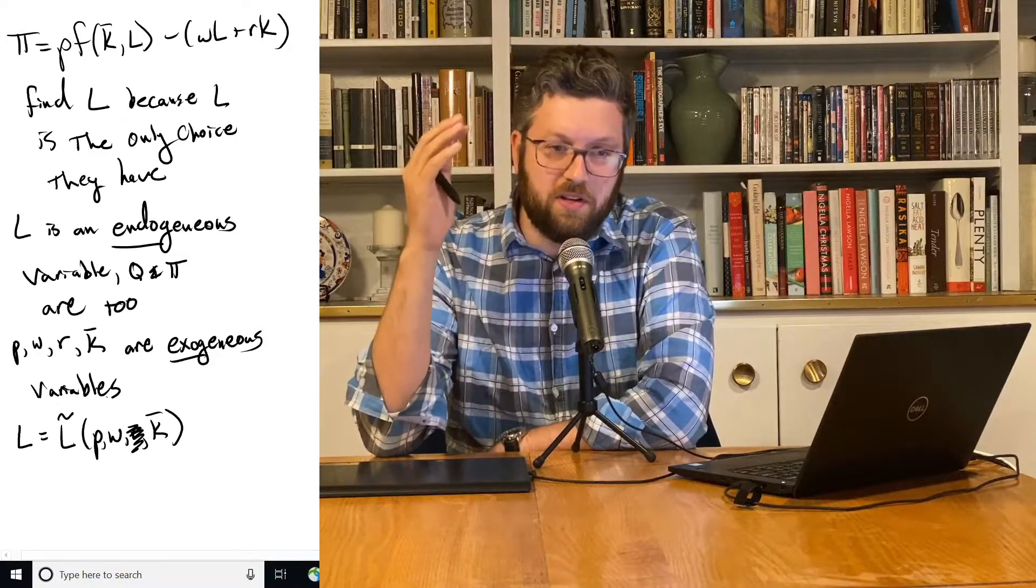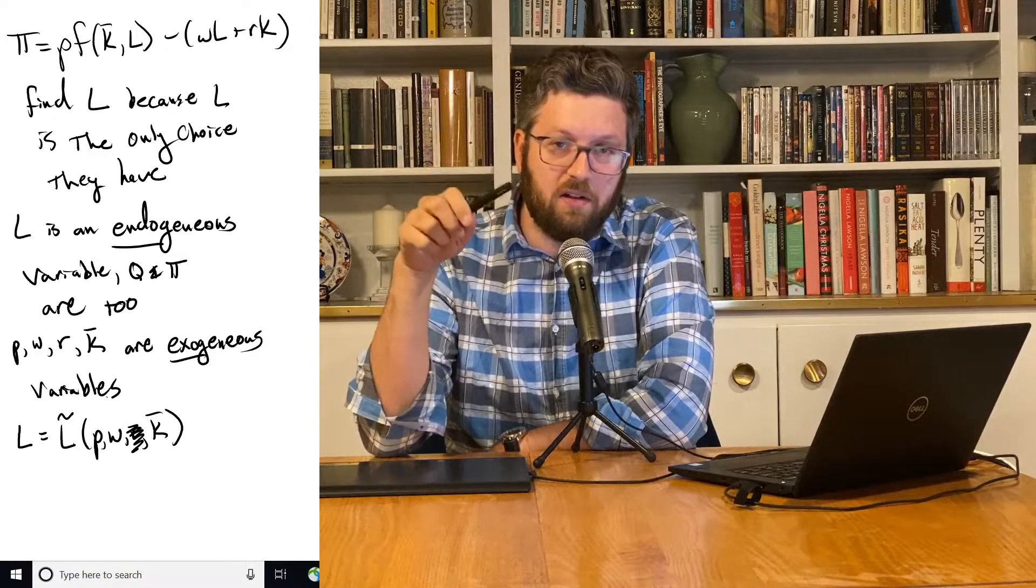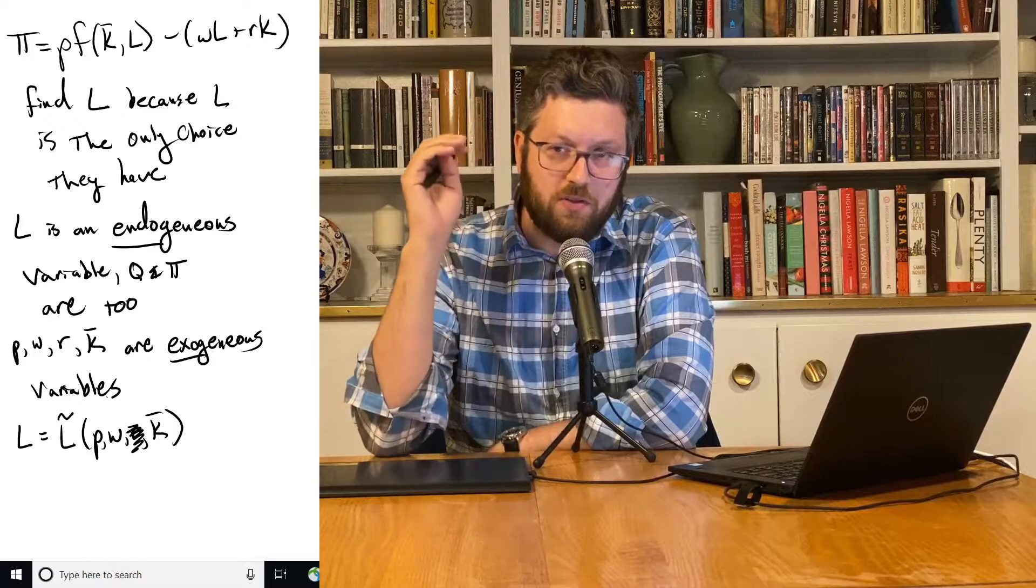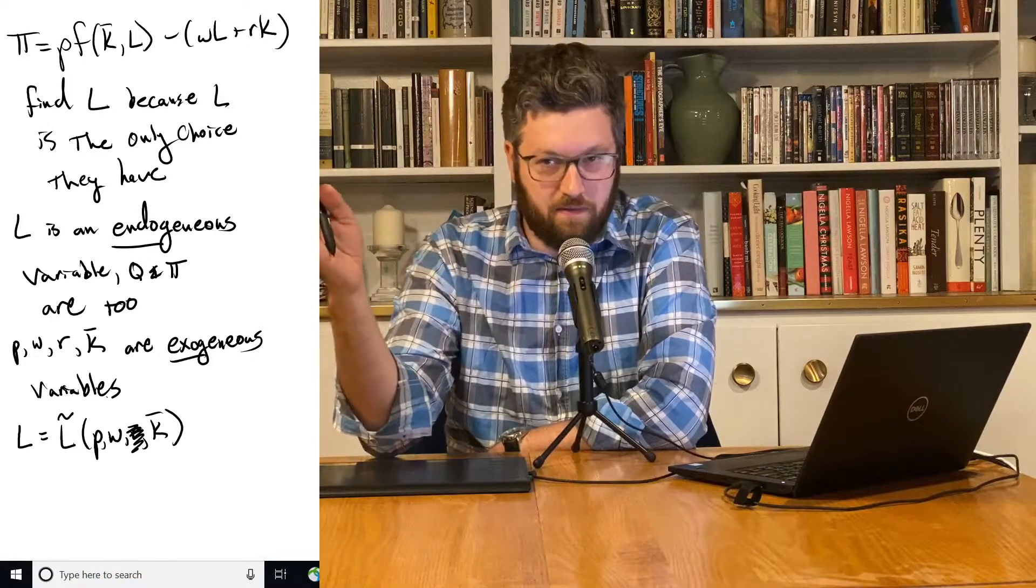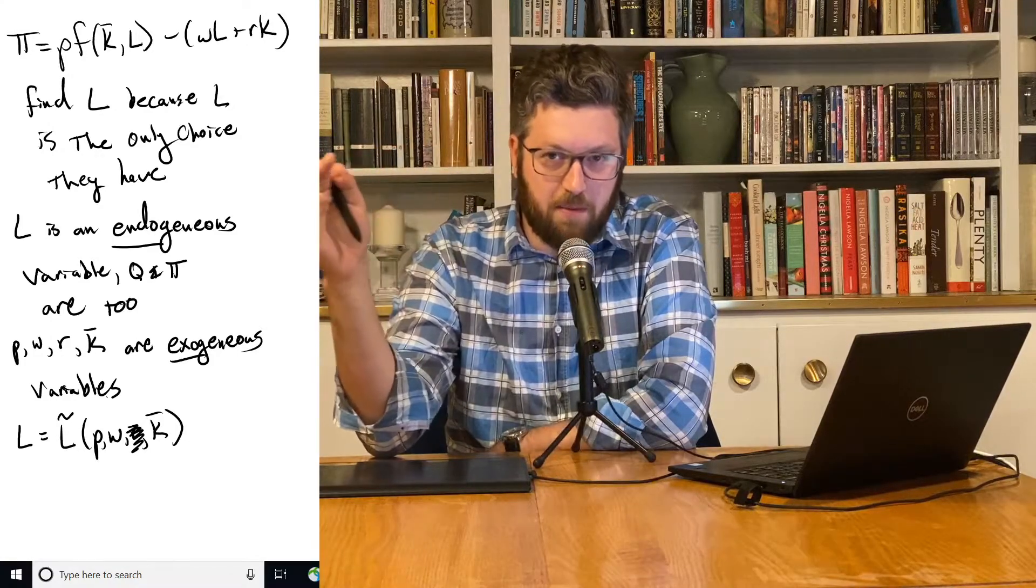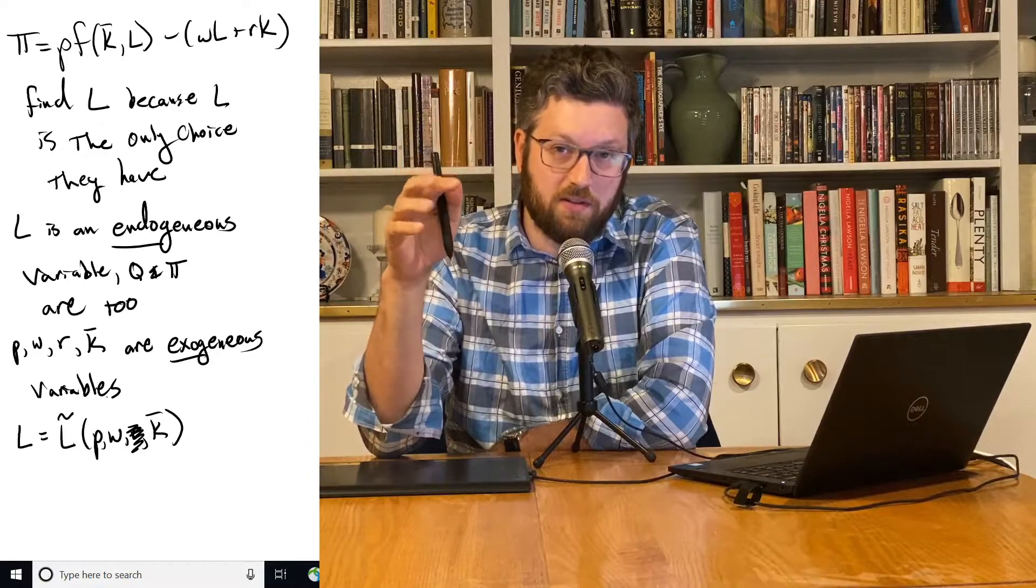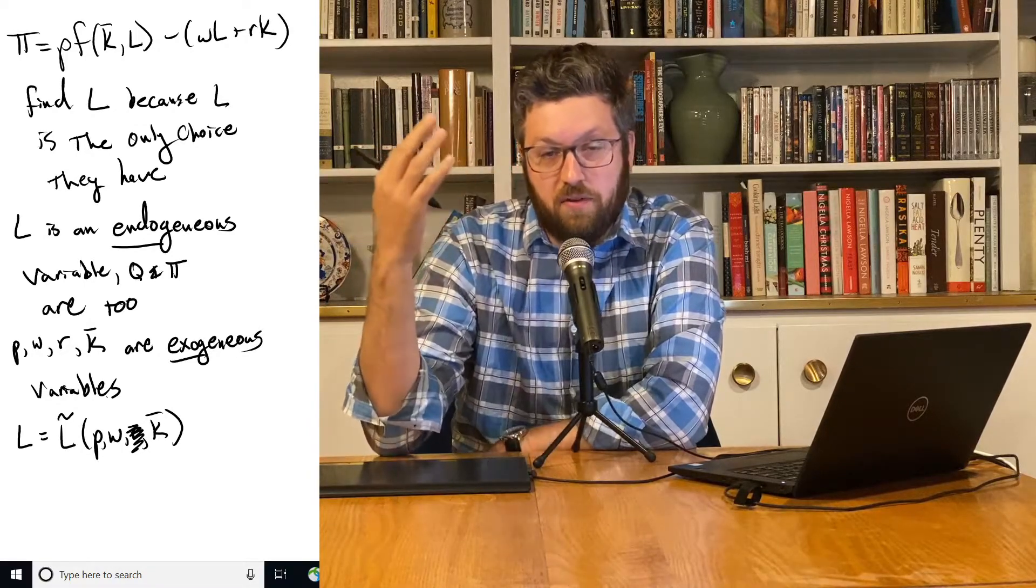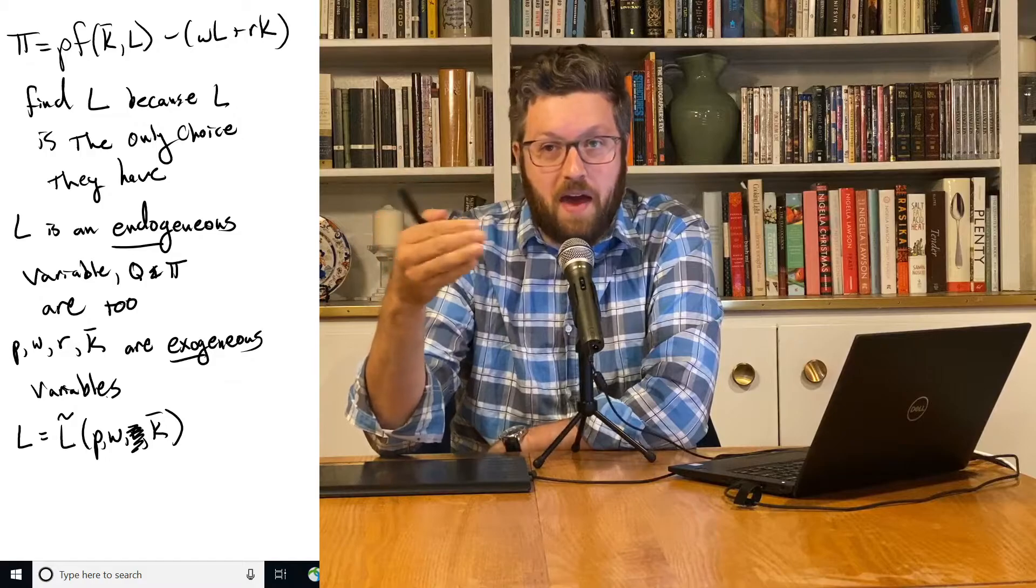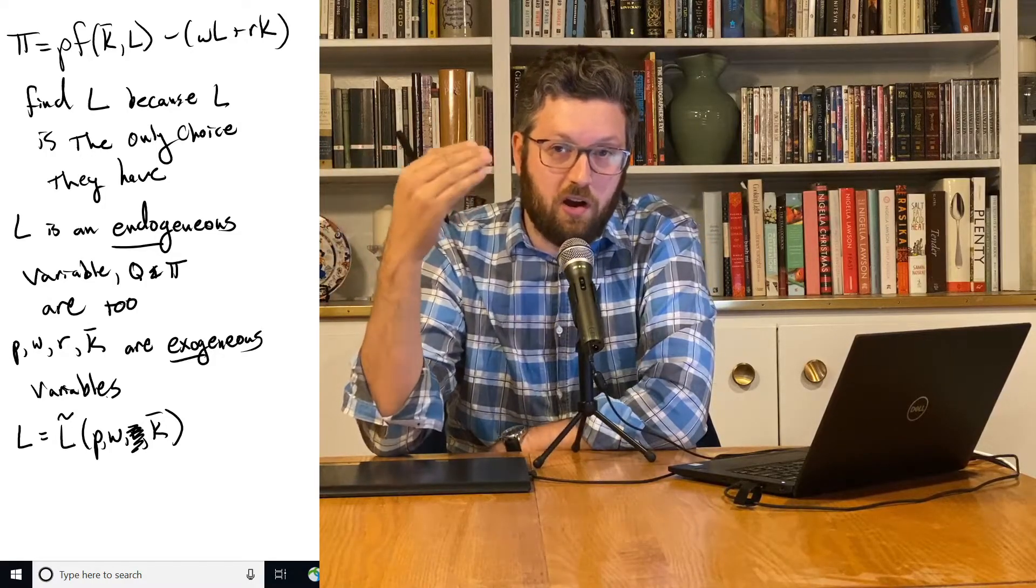In the last video, we did an example where we solved for L, and we had P given to us. We had all the variables that were given number variables were exogenous ones. And then the problem was to solve and find the value that is implied by that for the remaining variables, which are endogenous.